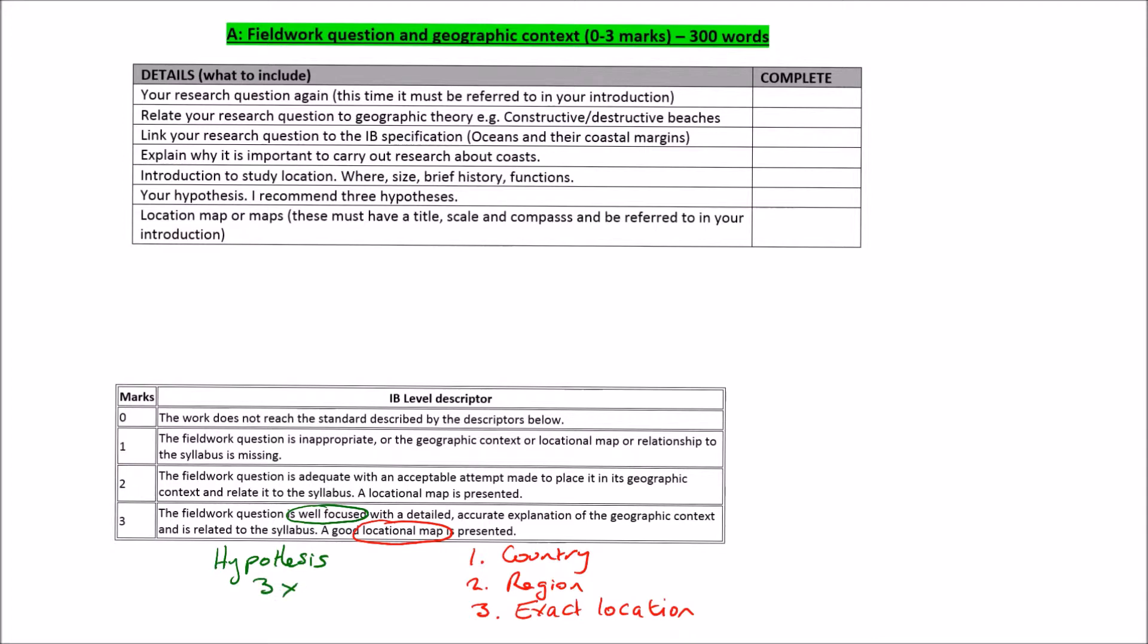The next part says with detailed accurate explanation of the geographical context. This part I'll mark down in blue. I'll put geographical context. What does that mean? Well, that means for you to explain, in other words, explain why this study is important. If you explain why it's important, geographically speaking, you're going to be having a detailed and accurate explanation of its context.